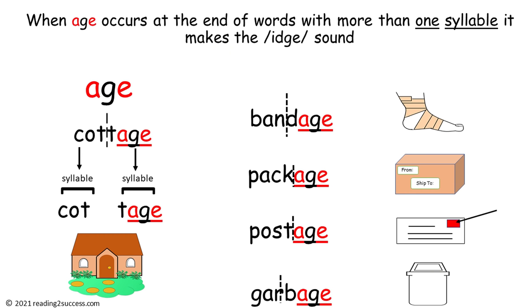It is important for kids to know that when A-G-E occurs at the end of words with more than one syllable, the G still makes a soft sound, but the ending changes to an -idge sound — it does not make an -age sound. So let's look at some examples: cottage, bandage, package, postage, and garbage.